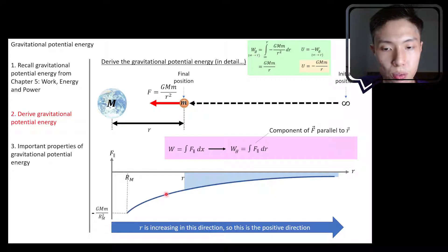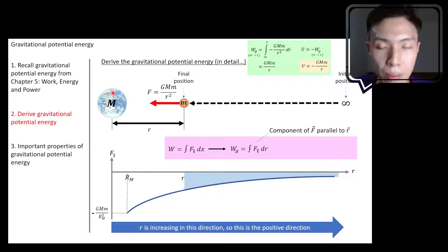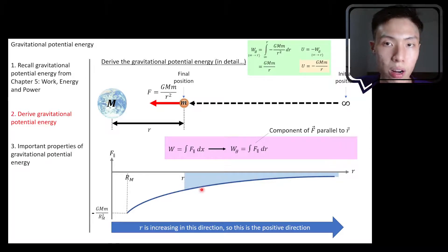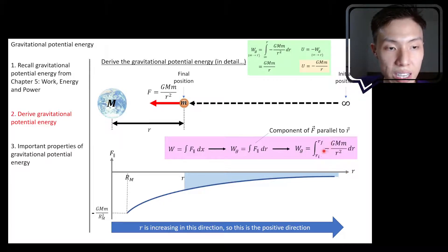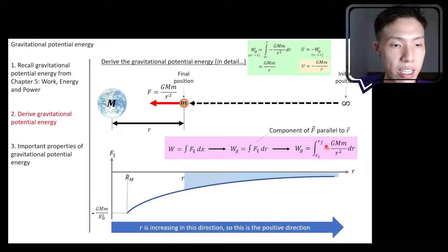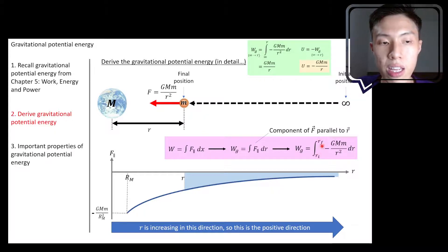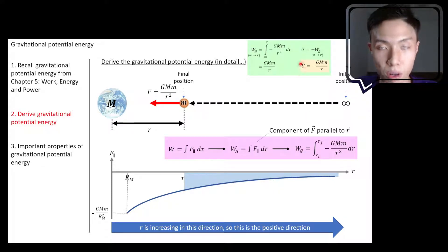The force approaches zero as we move away from big mass M. The area is now below the graph, which is why we get a negative — the force is opposite to the direction of R. We now substitute our initial R and final R as the lower and upper limits of integration. Let's use this equation to determine the work done by gravity and find the gravitational potential energy.